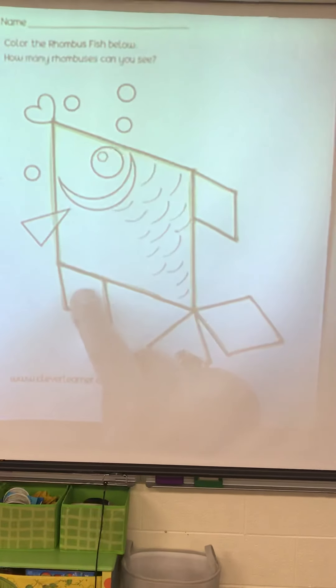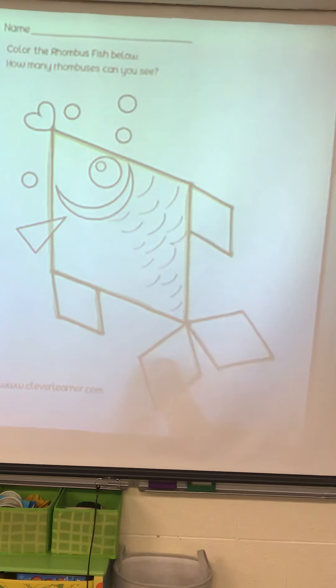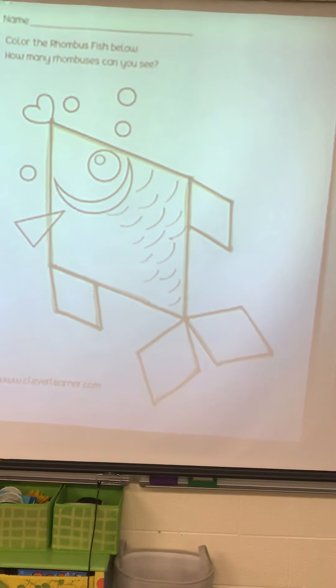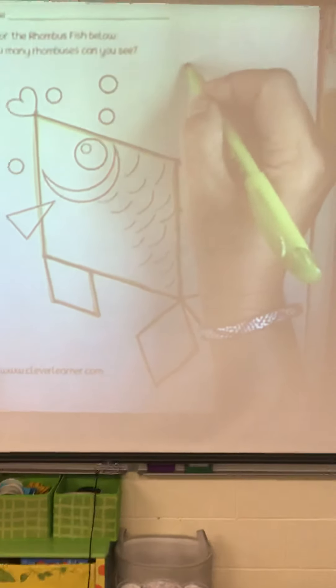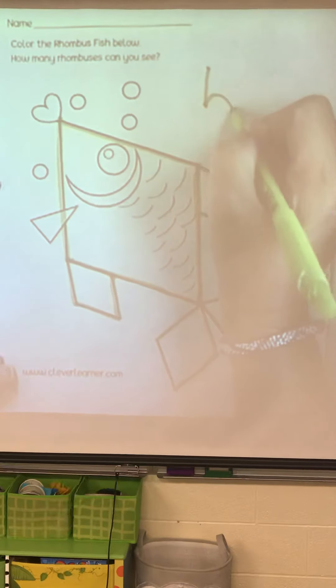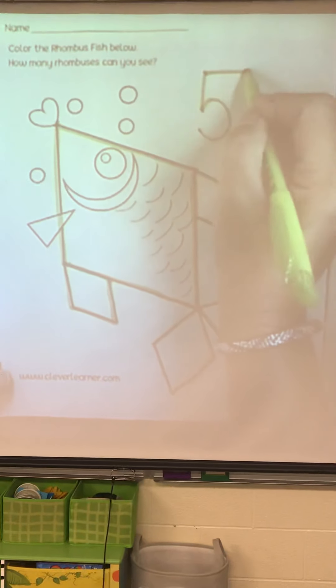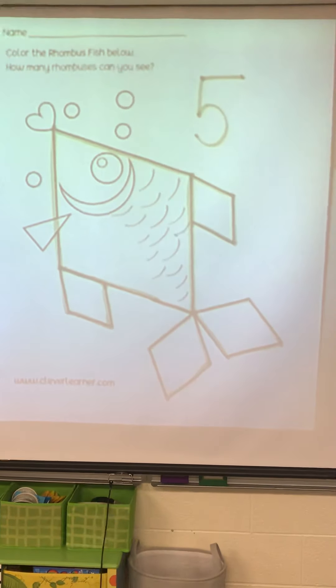Let's count how many rhombuses we have. One, two, three, four, five. Everybody make a five. Pull down, circle round, put a hat on top.